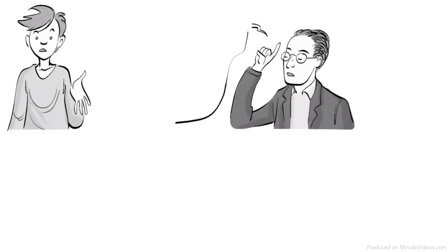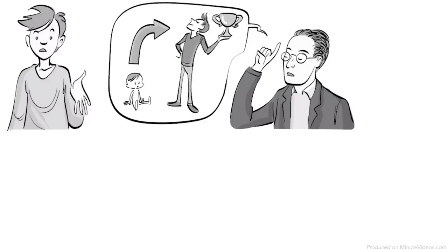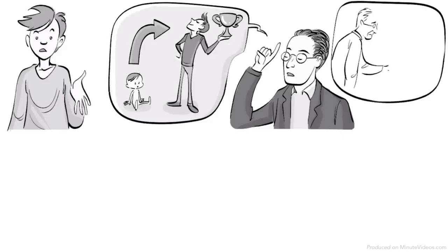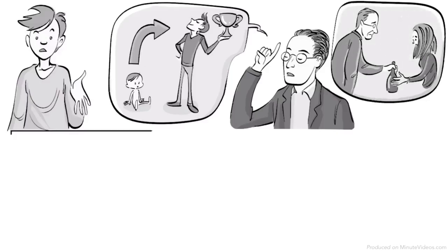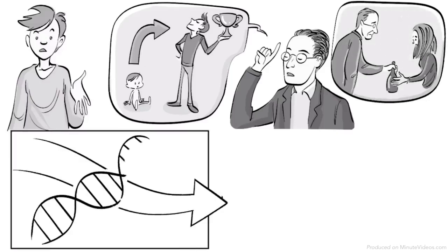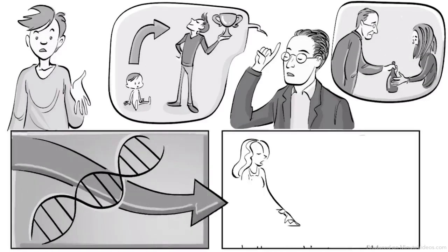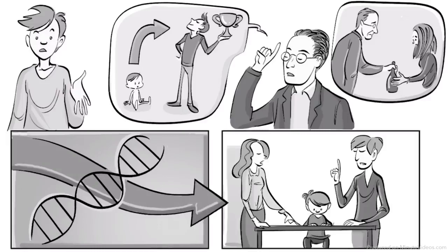What do you think? Watson was convinced that the kind of nurturing we receive can determine our life path, claiming that he could turn an infant into any man he wishes. In his own family, though, depression and bad habits were passed on from generation to generation. Does this happen due to genetic predispositions or is it the effect of a child's unfortunate upbringing?